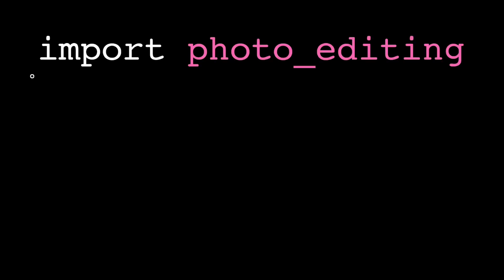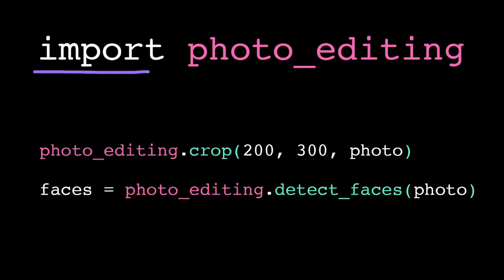To load a module into our program, we use the import statement. This is just the keyword import followed by the module name. Import statements go at the very top of our program. Then we can access any function defined inside that module with the syntax module name dot function name. This tells the computer to look for that function inside that module and then run that code.